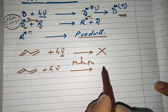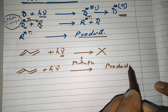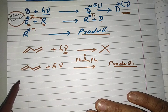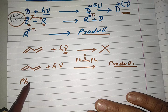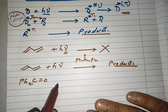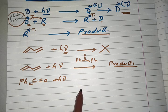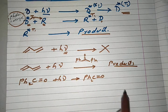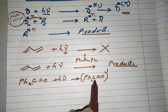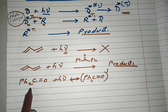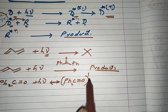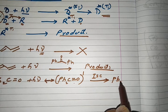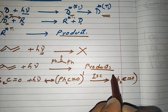We will see the products in today's lecture. First, benzophenone — we can write it as Ph₂C=O — absorbs light energy and becomes excited to the singlet state. This singlet state can return to its ground state by fluorescence or by a non-radiative process. Now this excited benzophenone undergoes intersystem crossing and becomes the triplet state.